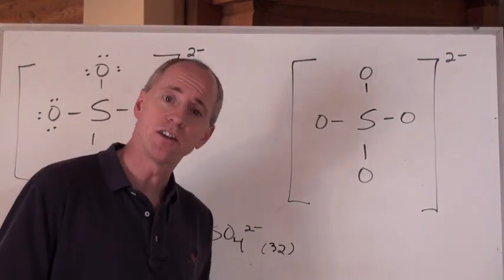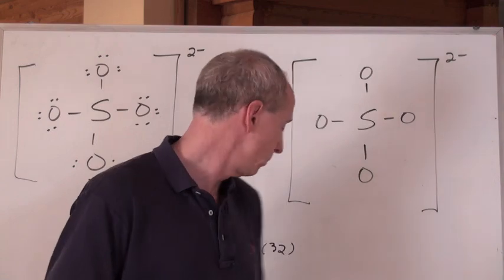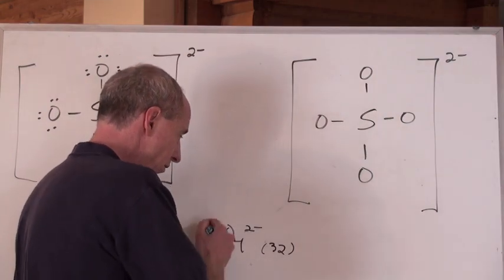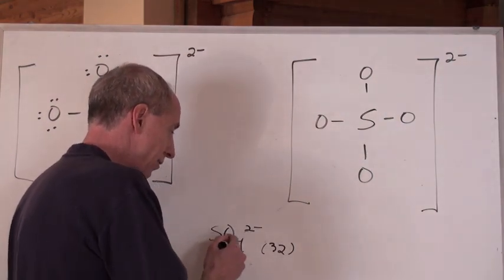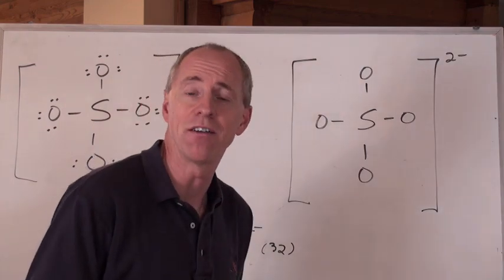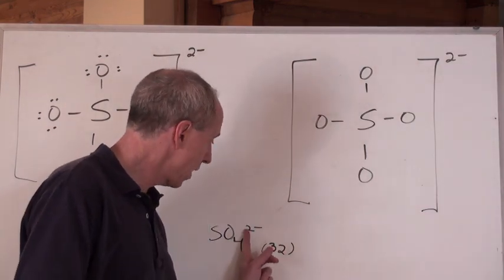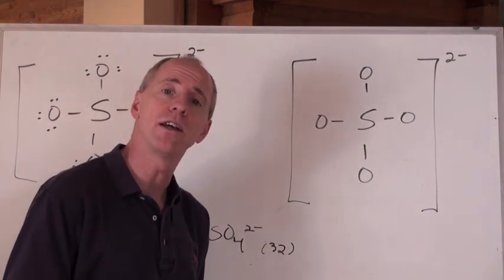SO₄²⁻ is the sulfate ion on the periodic table. If you count the number of valence electrons, group 6 and group 6 times 4, well actually that's really group 6 times 5, that's 30 plus the 2 negative, 32 total valence electrons.